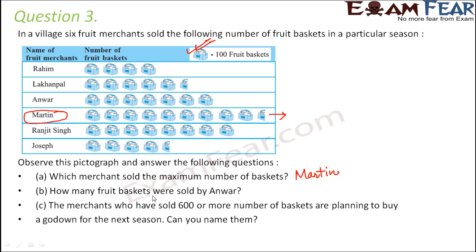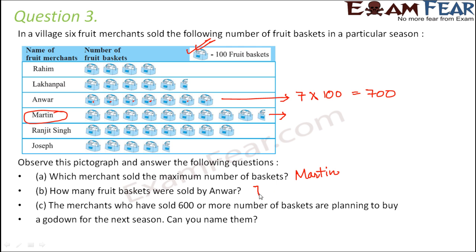How many fruit baskets were sold by Anwar? So how many baskets did he sell? How many pictures of baskets are there? 1, 2, 3, 4, 5, 6, 7. So total 7 baskets and each of these pictures represents 100 baskets. So 7 into 100 — that means he sold 700 baskets.